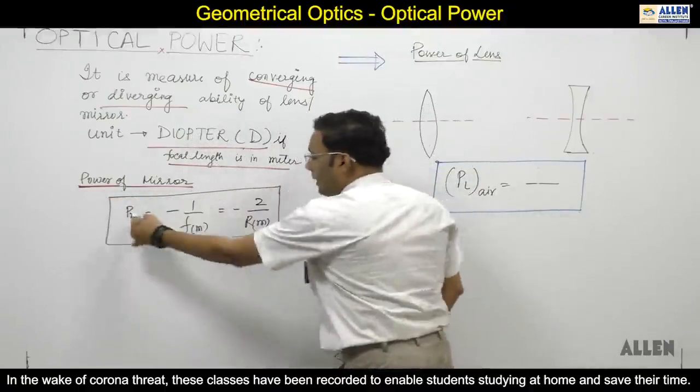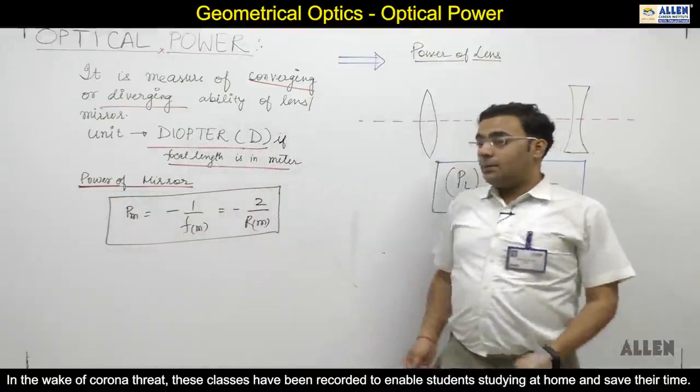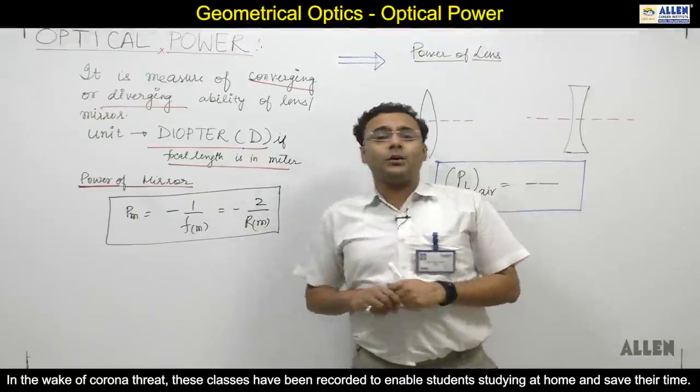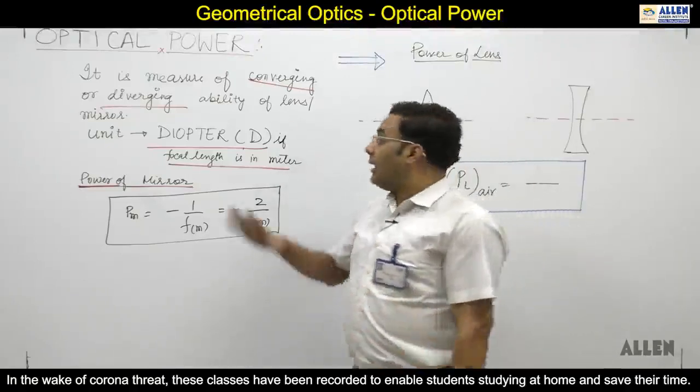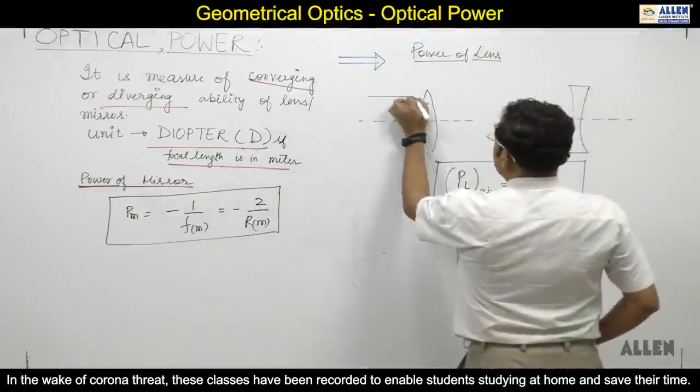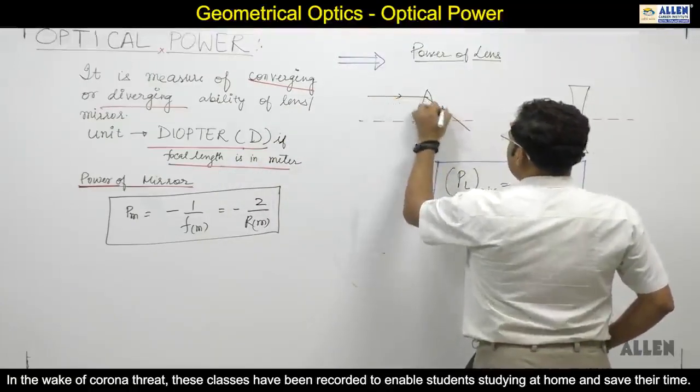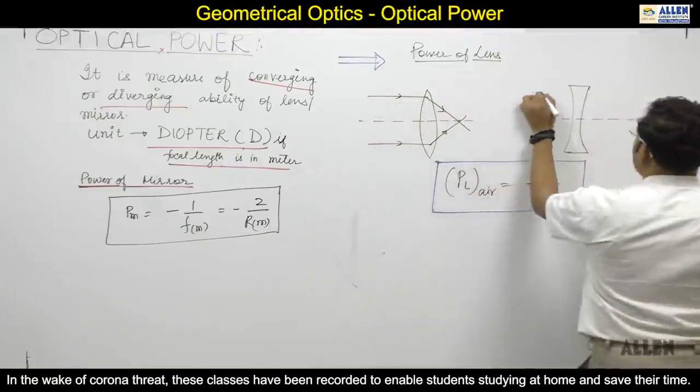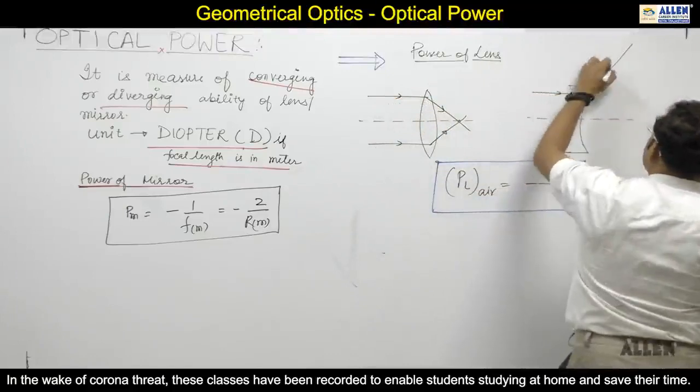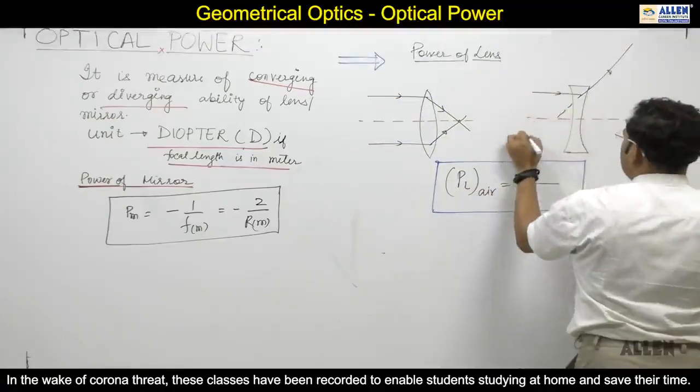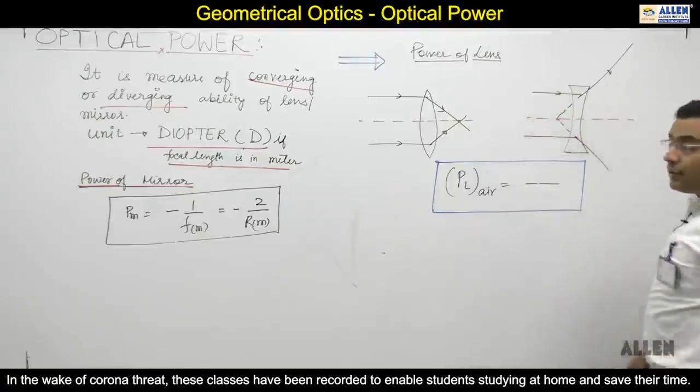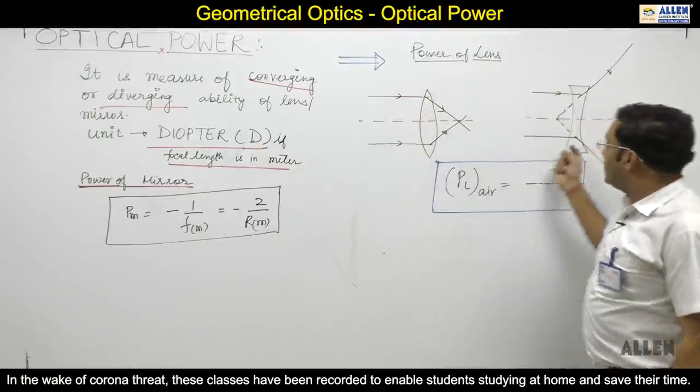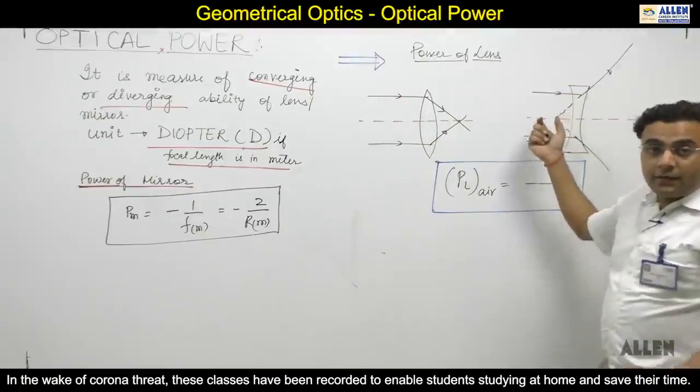You can see that the medium the light goes through affects this. The surface effects should be considered. In this case, focal length positive means power positive. In this case, focal length negative means power negative.